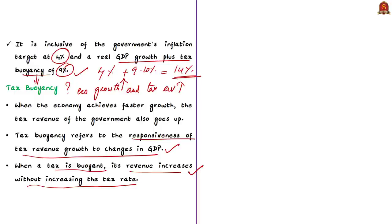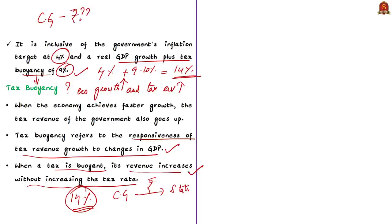The 2017 GST Act envisages 14 percent growth in GST revenue every year. But due to the fall in GDP, this 14 percent growth rate cannot be achieved. If it is not achieved, the central government has to pay compensation to state governments. This year, the central government itself is facing a huge economic crunch due to extensive lockdowns, and is investing more money in managing the health and economic crisis of COVID-19. So the central government may not be in a position to pay compensation to states.